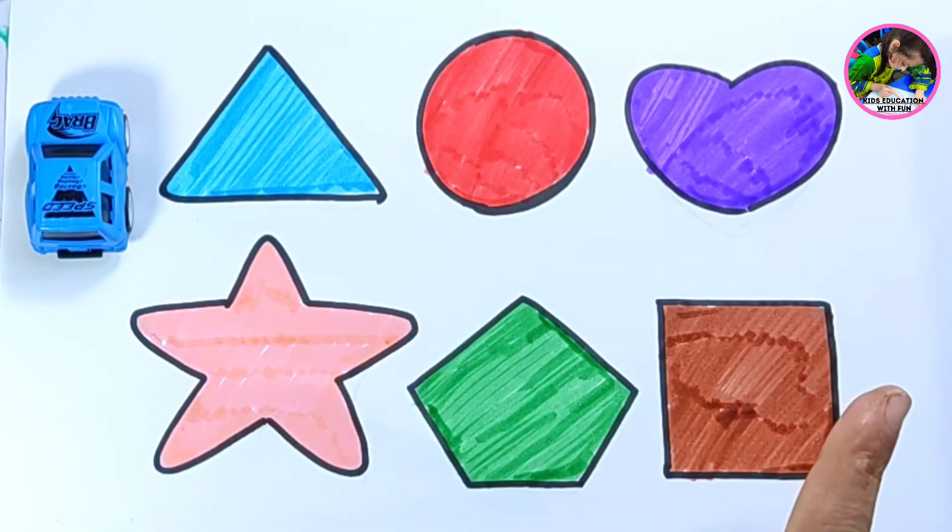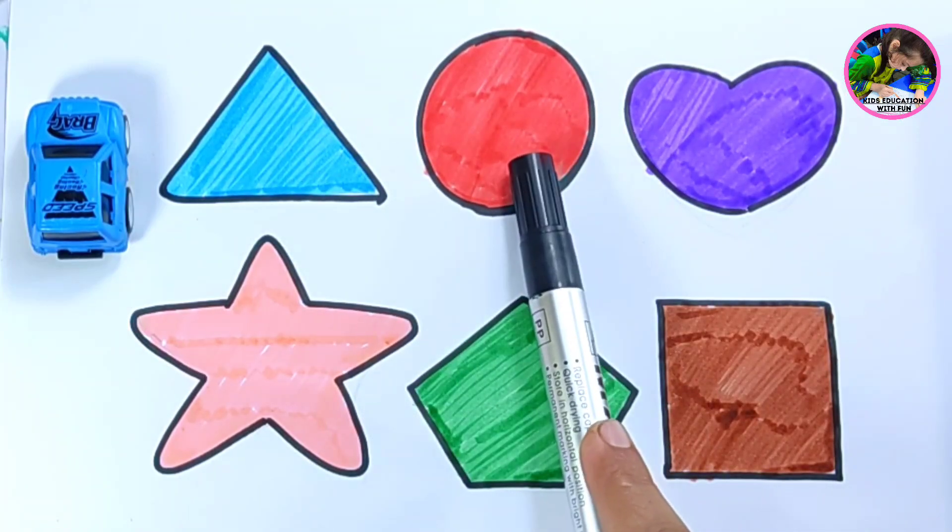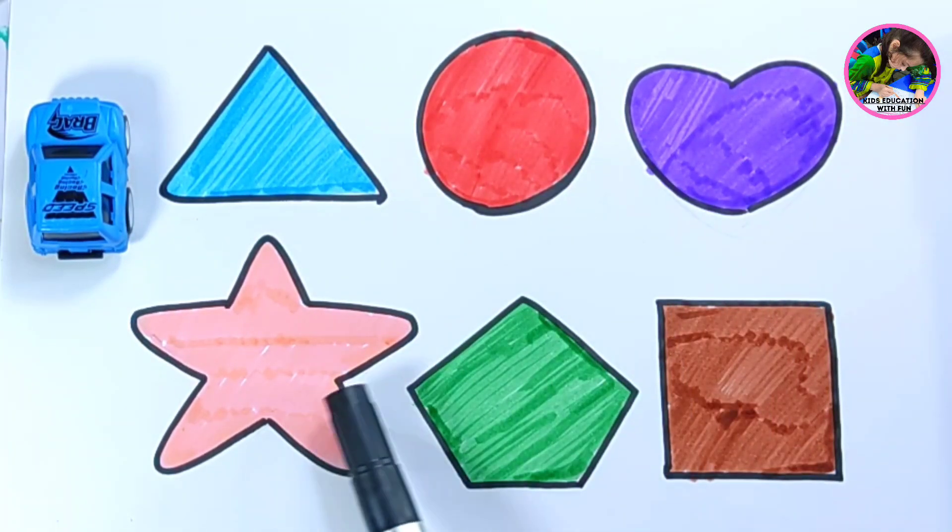Wow, we have done! Let's revise these 2D shapes. Triangle, circle, heart, star.